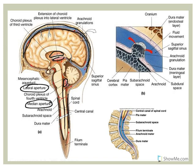The arachnoid granulations are from the arachnoid mater and are responsible for reabsorbing CSF, returning waste products back into the venous system. CSF circulates down the spinal cord and continues past the end of the spinal cord — about to the second or third sacral vertebra. The spinal cord itself ends around the first and second lumbar vertebrae.